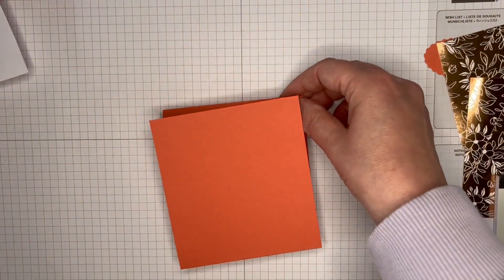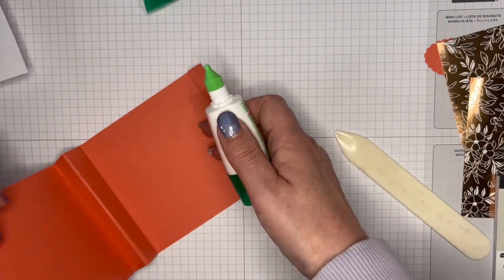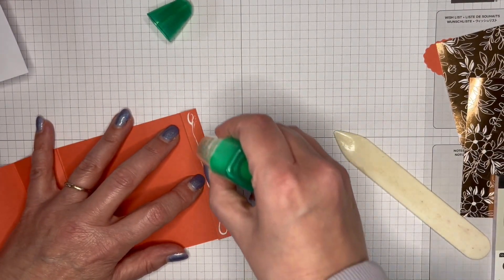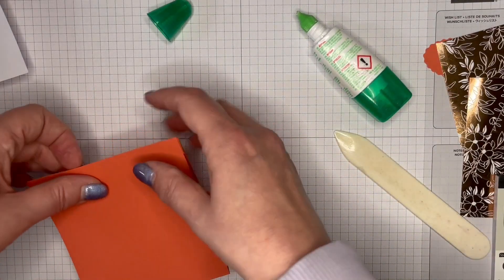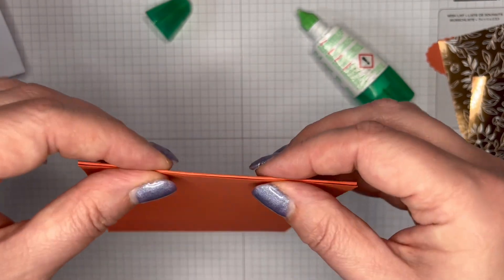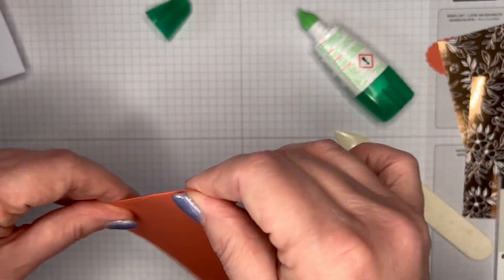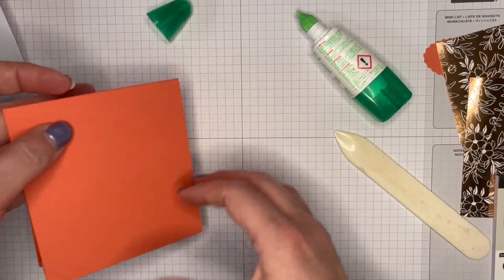A little bit of glue on that tab at the top. And then just fold that over. That will sit nice and neatly along there, and you've got your easel already. Easy peasy.